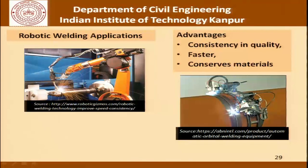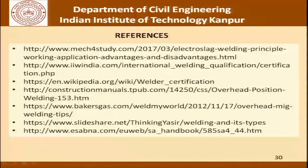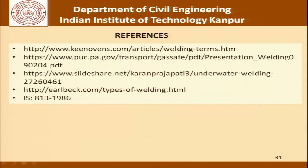Before concluding today's discussion on welding, let me also show you some pictures of robotic welding applications where the use of a human welder has basically been eliminated. The human intervention has been removed, and that gives us consistency in quality, faster operation, and it conserves material. With this, let me give you a list of references which I have used and which you may find relevant to understand the whole operation a little better. I look forward to seeing you in another case study on quality operations in construction projects. Thank you.